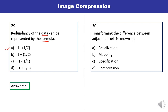Question 30: Transforming the difference between adjacent pixels is known as — mapping. So transforming the difference between adjacent pixels is known as mapping. B is the correct answer.